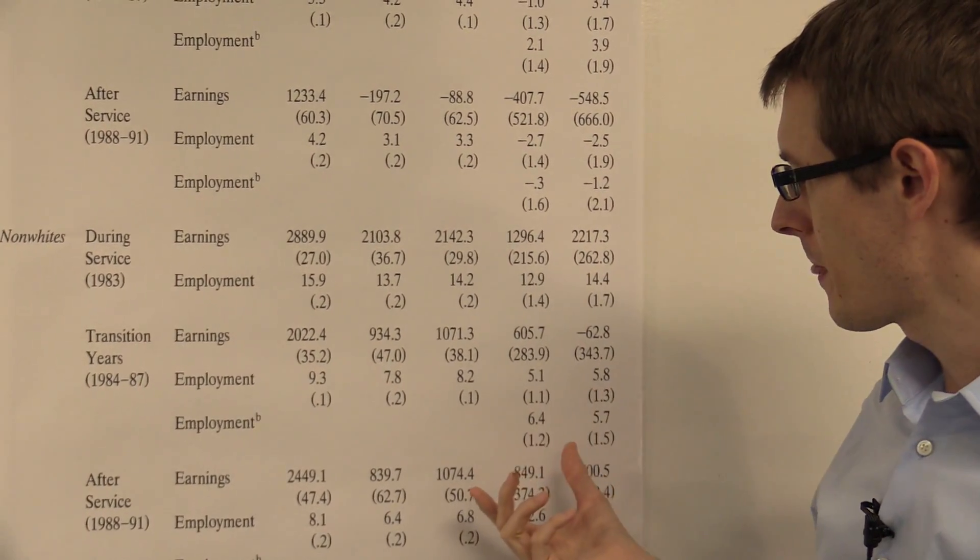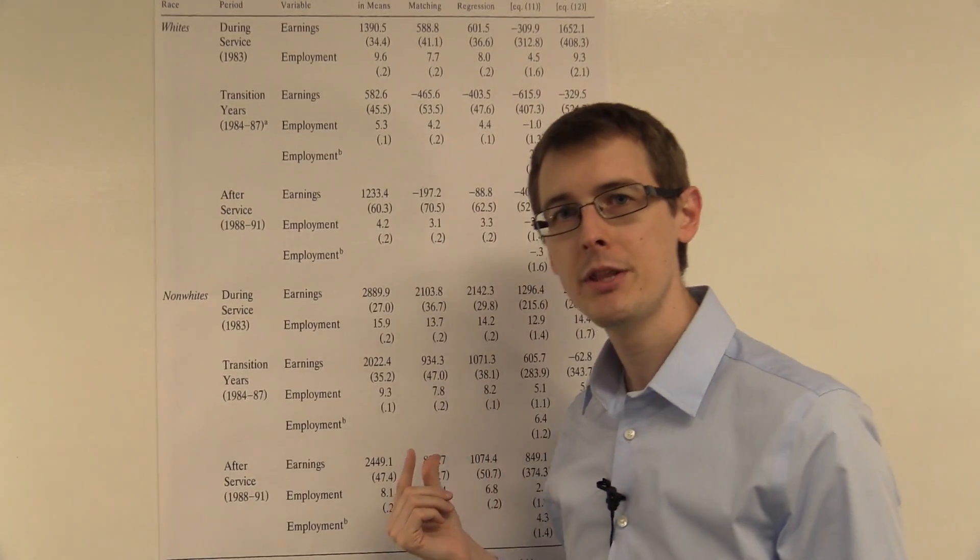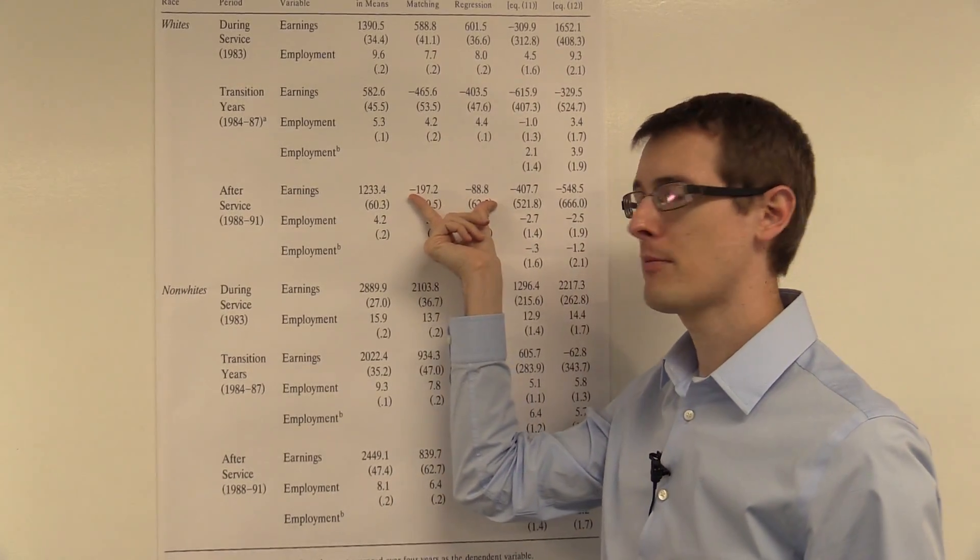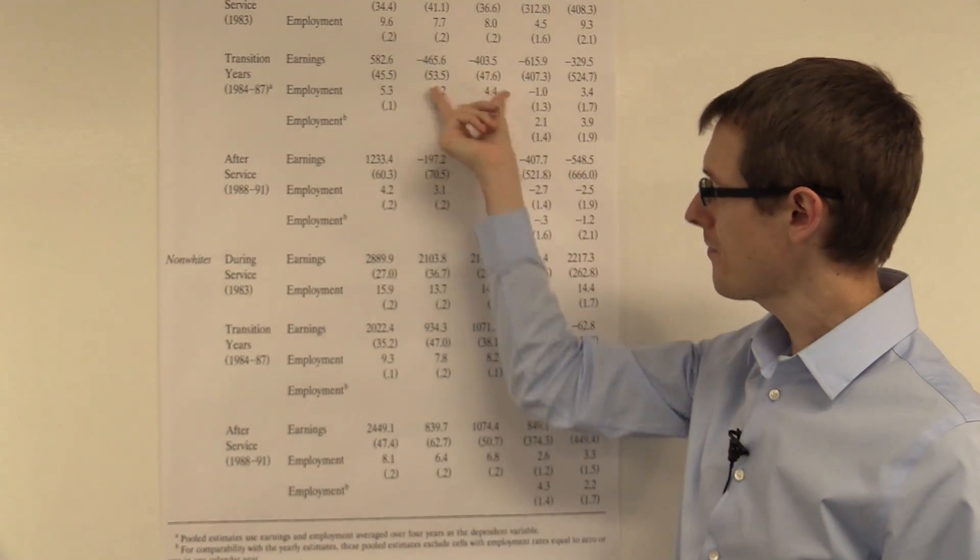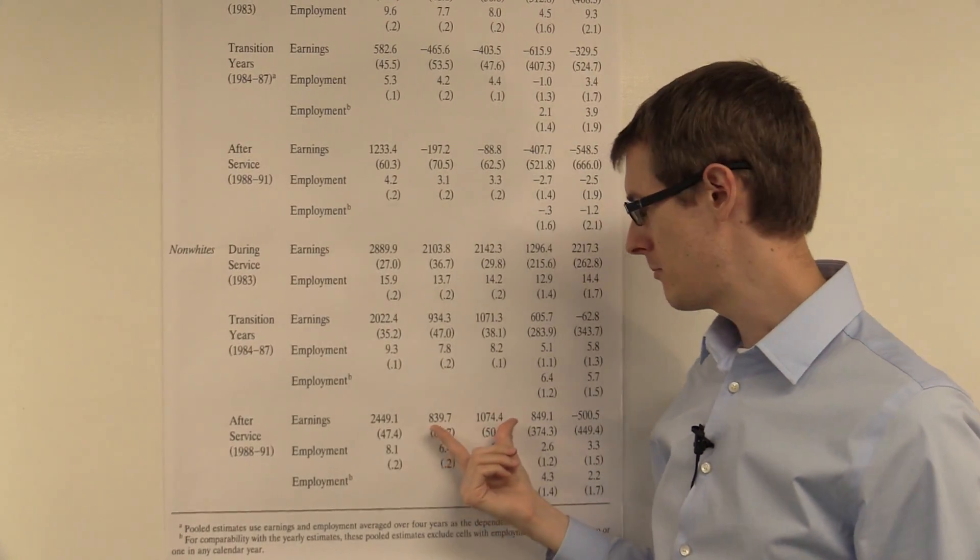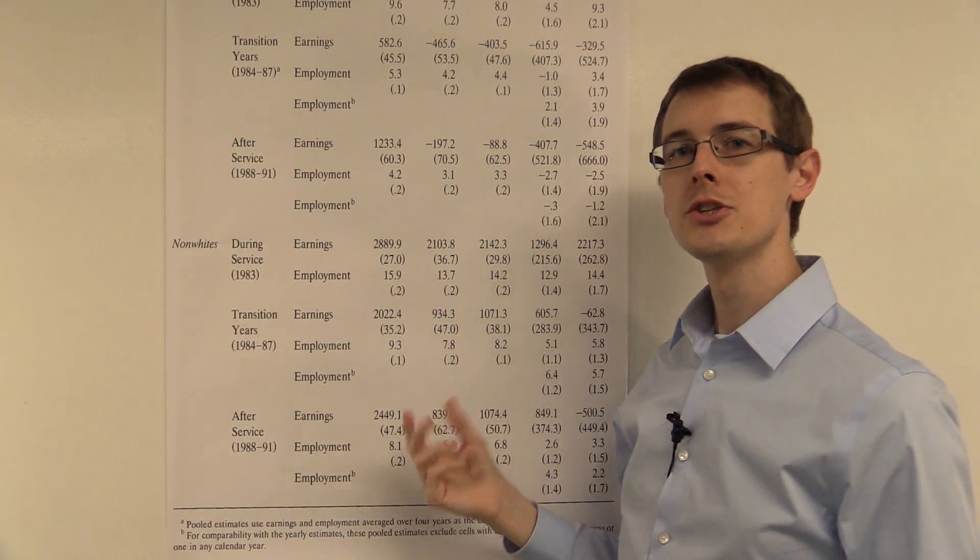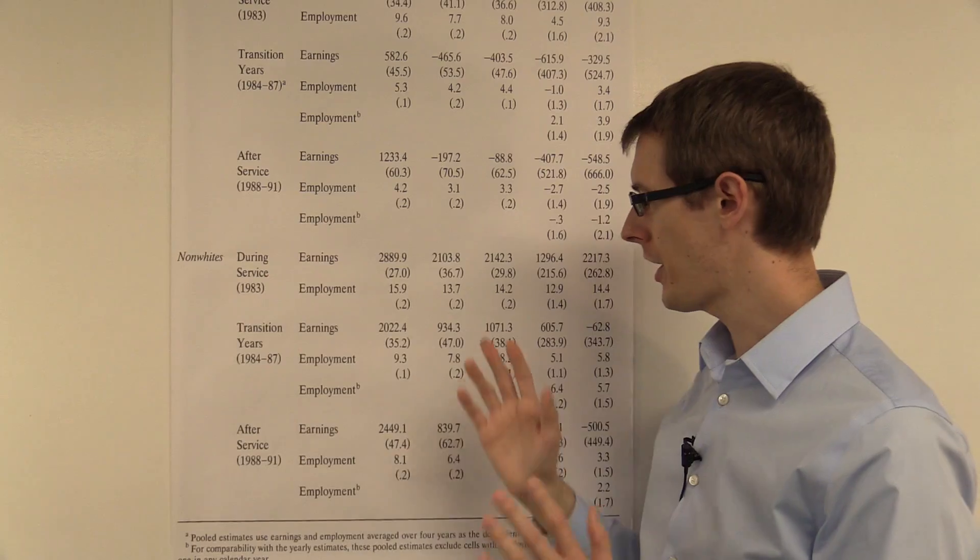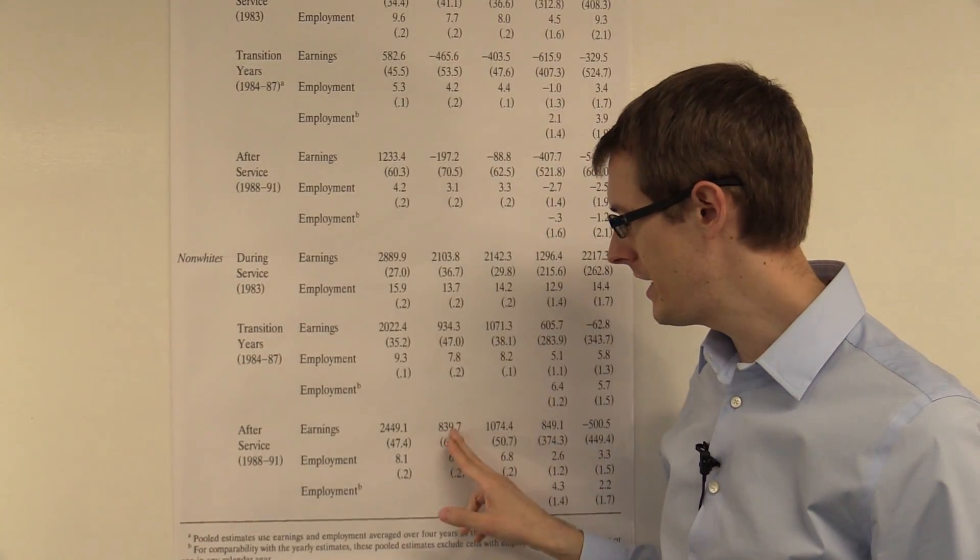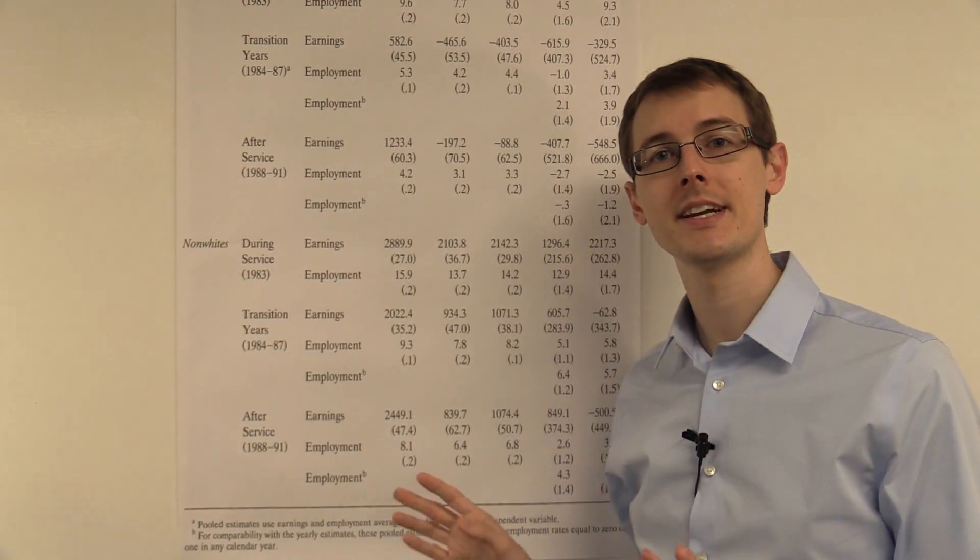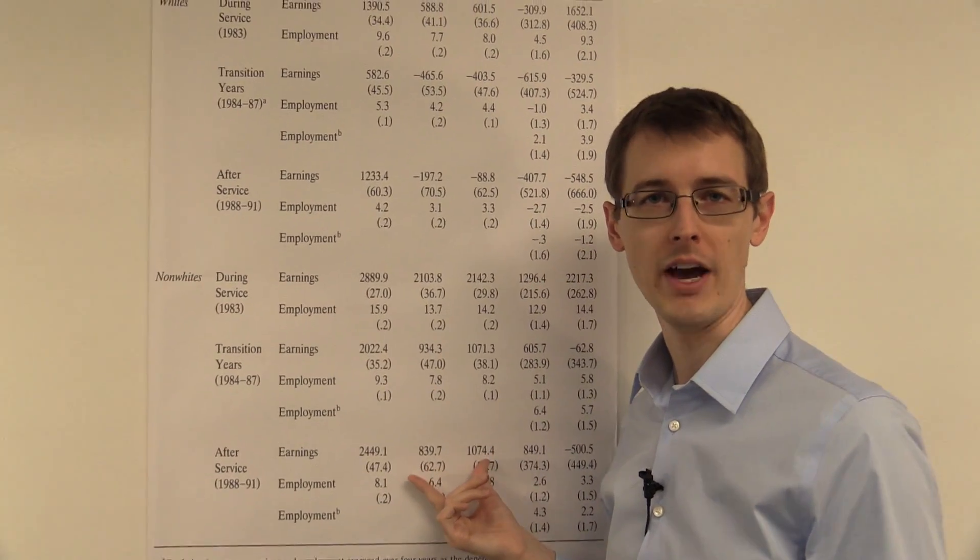So the main conclusion from just looking at these numbers is that joining the military hurts your lifetime earnings for whites by this much, and for non-whites, it helps their lifetime earnings by this much, by about $1,000 after service. So one final thing before walking away and saying that we're done and we know the causal effects are, let's just double check and make sure that these estimates are actually statistically significant. That we actually have a large enough sample size to conclude that these are real effects.